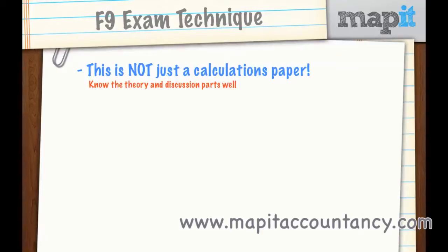You must be able to do those discussion parts well or you will not pass. You cannot rely on just doing the calculations. On the other side of that, if you're not great at the calculations — if you don't quite get them all — you can know the basic calculations really well and then know the discussion, and if you do that you will definitely pass. You can know the simple calculations but know your theory really well and still pass the F9 paper.